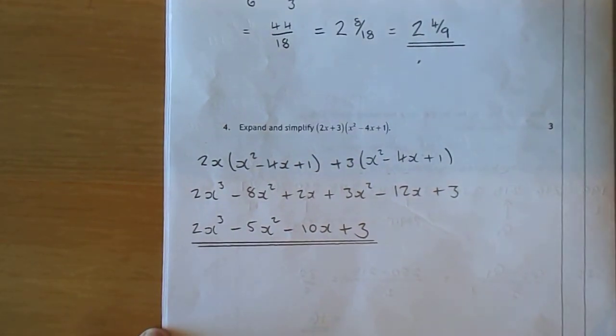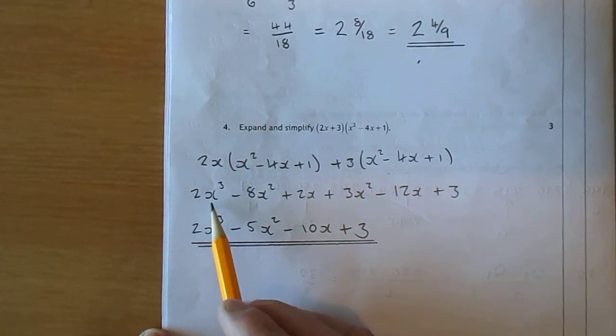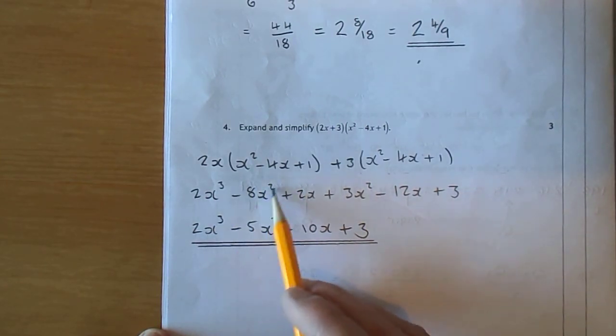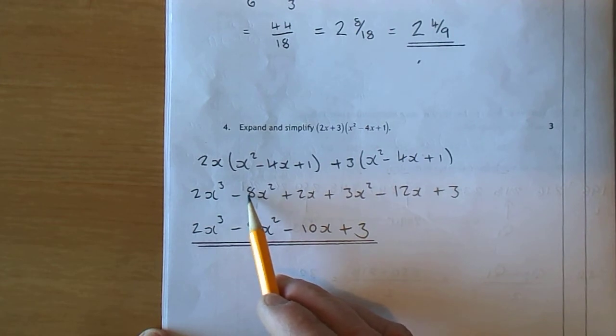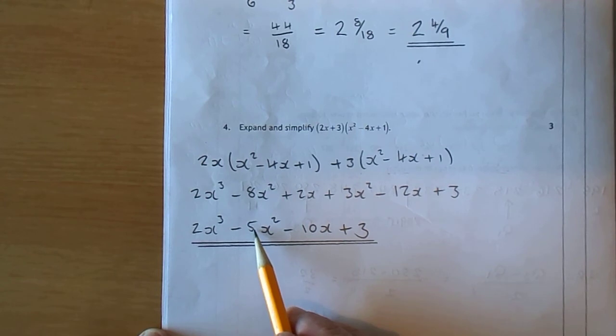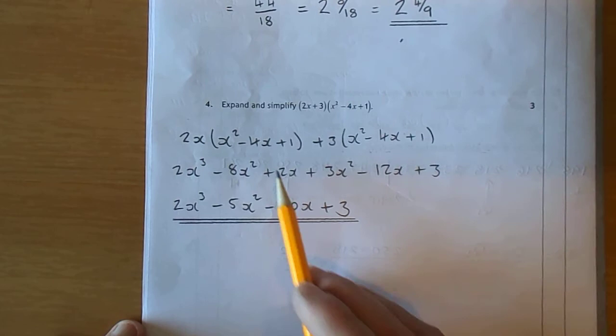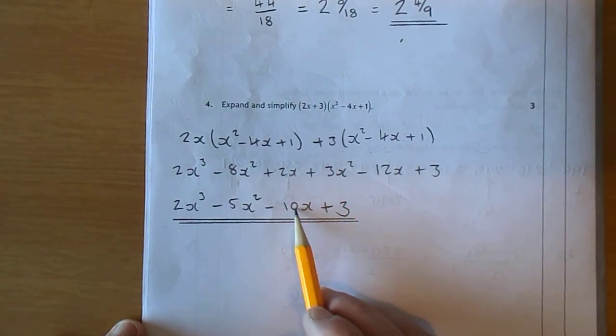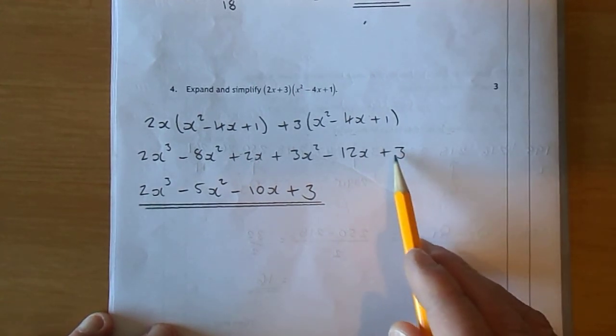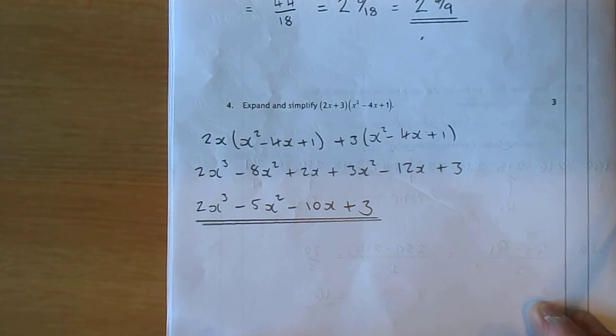Now let's tidy things up by collecting terms that have got the same power of x. They're called like terms. 2x cubed. Nothing else involving x cubed. That just gets copied. Let's move down 1 power to the x squared. So we have minus 8x squared plus 3. Minus 8 add 3 is minus 5. So that's minus 5x squared. Let's drop down to the x's now. Plus 2 take 12 is minus 10x. And then we have what we call the term independent of x. That's the plus 3. So then we have it there. 2x cubed take 5x squared take 10x plus 3.